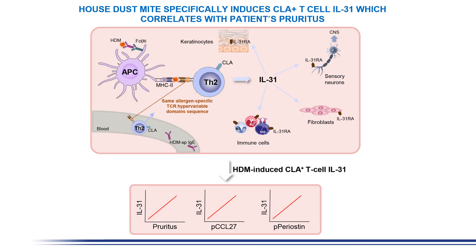Pruritus is also an interesting area, since pruritus is a behavioral extension of TH2 inflammation and allergens are the most relevant stimulus of TH2 cells. Histamine-induced IL-31 by circulating CLA-positive T-cells correlates with patients' pruritus intensity, plasma levels of periostin, and in patients with high levels of specific IgE to histamine.